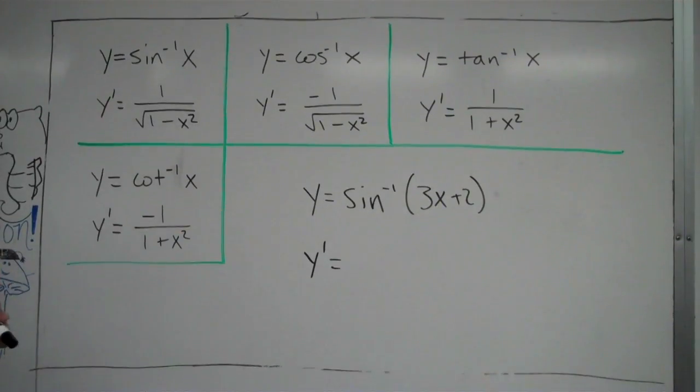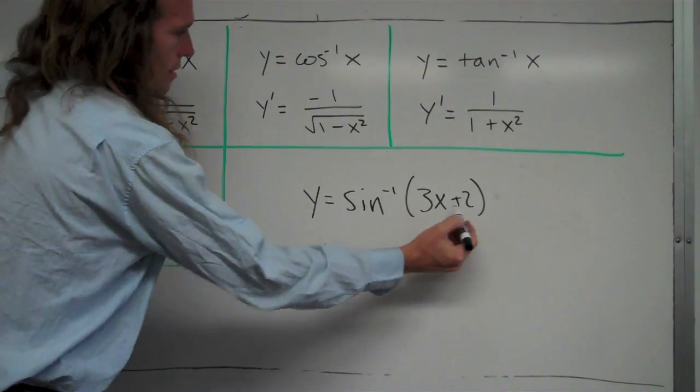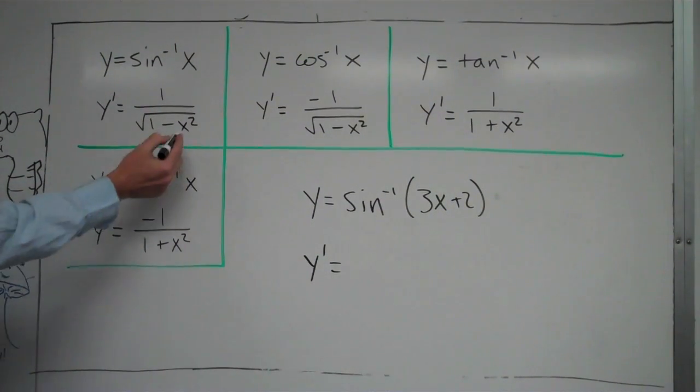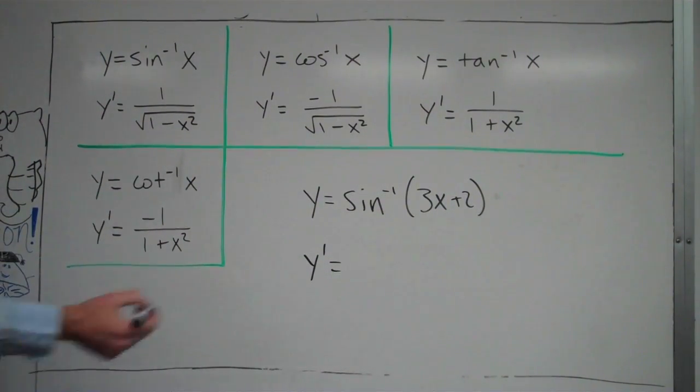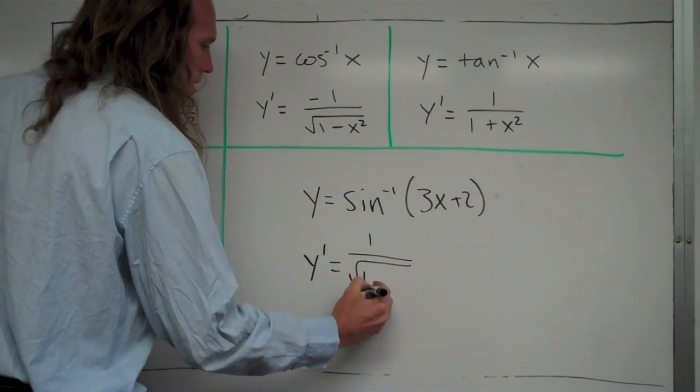So right here, where I have x, and this time instead I have 3x plus 2. So I'm going to go back in my formula, and wherever I see an x, I'm going to replace it with 3x plus 2. So it's going to be 1 over square root of 1 minus,